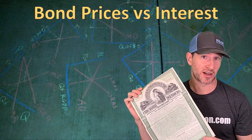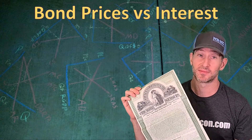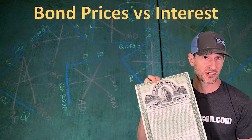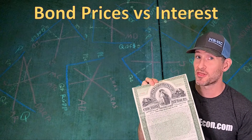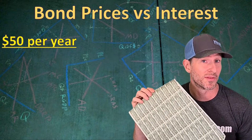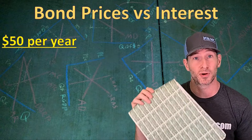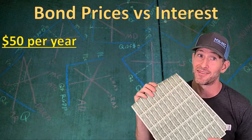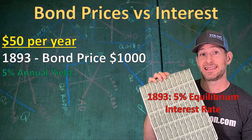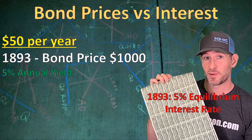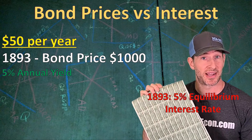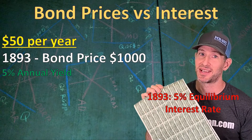For the rest of this video, we're going to talk about bond prices and the relationship to the interest rates we see in the markets. This railroad bond was originally sold in 1893 for $1,000, and the coupons attached to this bond indicate that the owner of the bond was paid $50 per year — $25 every six months. Since the price of the bond was $1,000, that means in 1893, when this bond was originally printed and sold, we had a 5% equilibrium interest rate because $50 is 5% of $1,000.